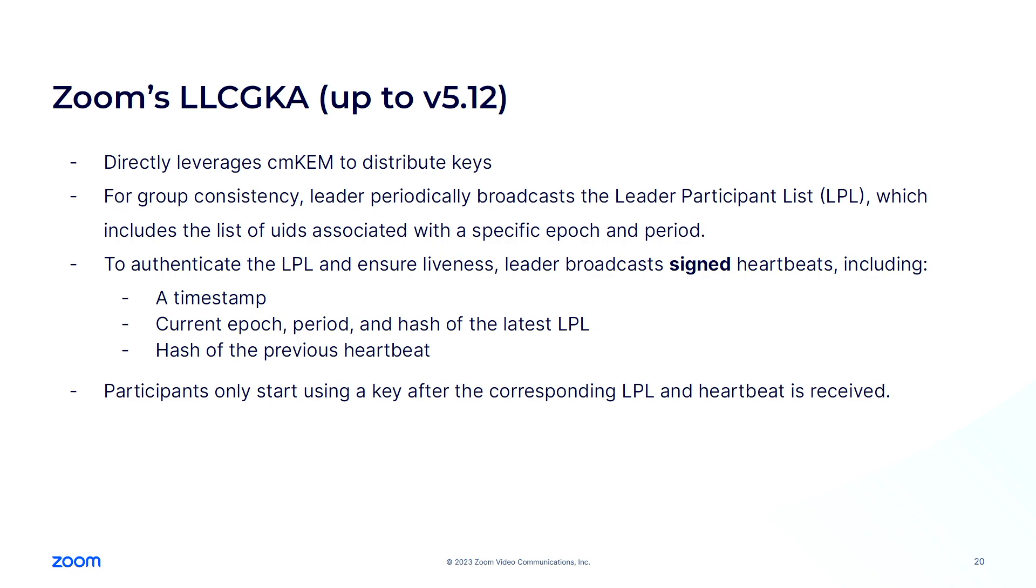So in the security formalization here, we assume that parties' clocks go at the same speed, which is reasonable because meetings are short and they are run on modern devices, but we do allow for arbitrary offsets between the clocks. How do we achieve this? We use the protocol that I was describing before, the CMCAM, to distribute the keys. For group consistency, the leader simply sends a participant list that describes the group for every epoch and period, and this participant list is authenticated by the leader also sending signed heartbeats that both authenticate this participant list and also provide a mechanism to enforce liveness because they include a timestamp and the current epoch, the period, and also a hash of the previous heartbeat so that the latest heartbeat always authenticates the whole history of the meeting.